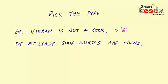Now the next statement is: 'At least some nurses are nuns.' You can see that the sentence is starting with the phrase 'at least some,' which means the writer or speaker is taking only some nurses and not all into consideration. And as the sentence has no negative inferences in it, the statement is a particular affirmative kind of statement and we'll denote it with the letter I.